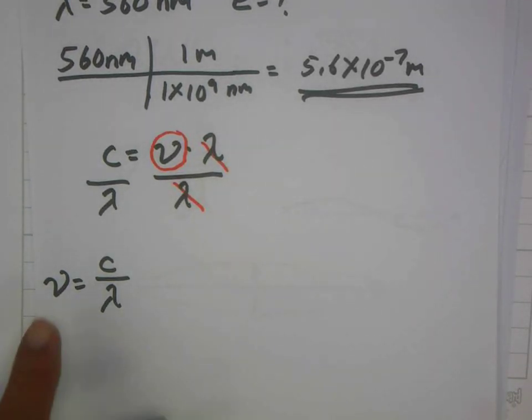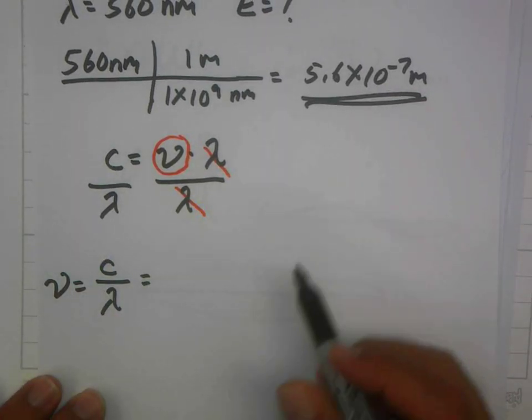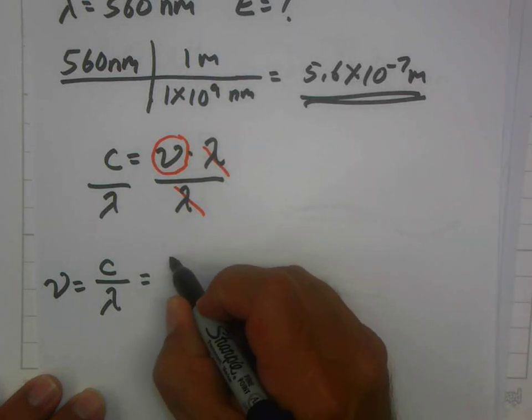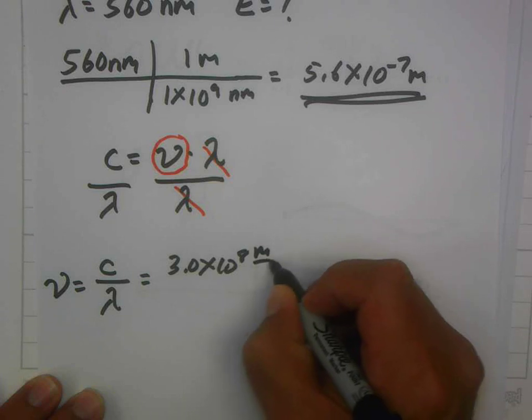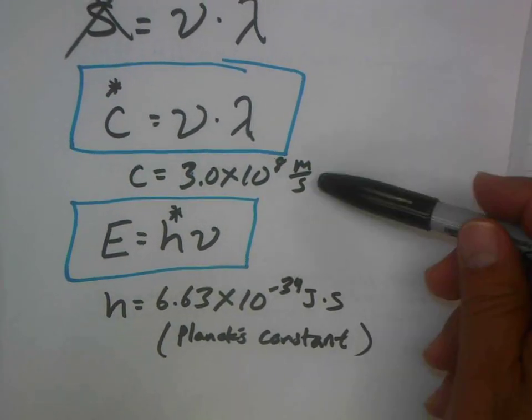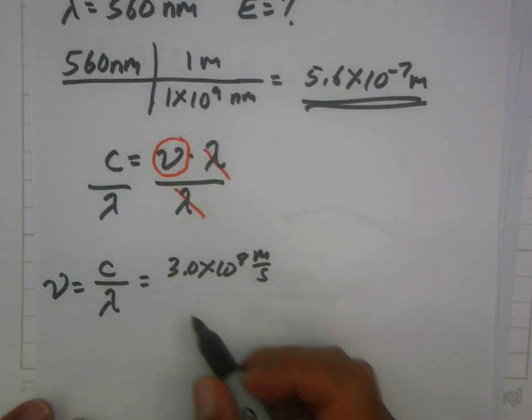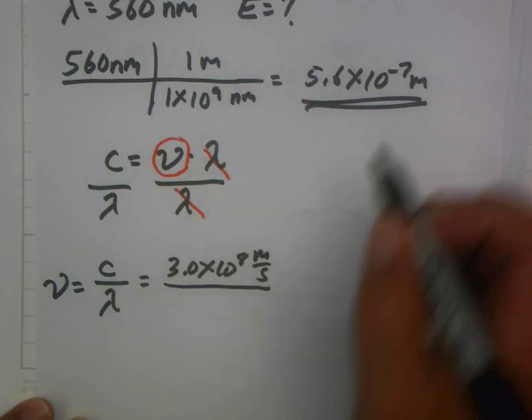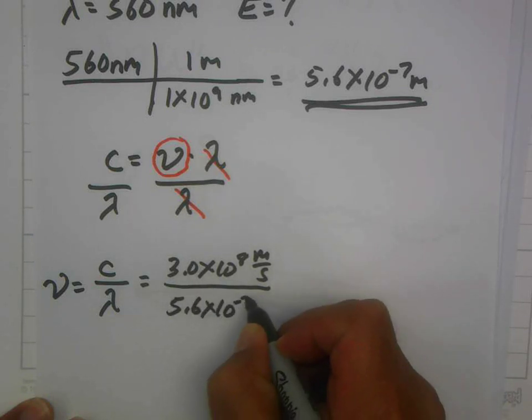So this is what your frequency will be here. Speed of light over your wavelength. So let's plug those in. We know that the speed of light is 3.0 times 10 to the 8th meters per second. How do I know that? Once again, it's a constant. It's always the same. I will give it to you on a test. Divided by our wavelength, which is 5.6 times 10 to the minus 7th meters.